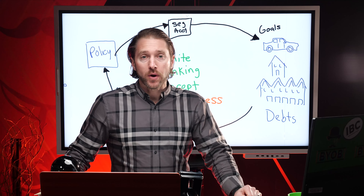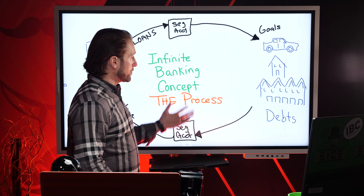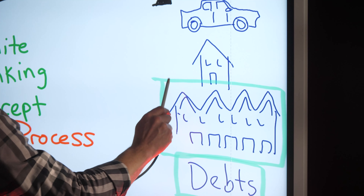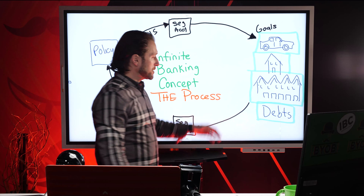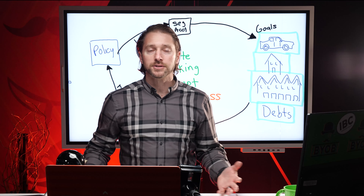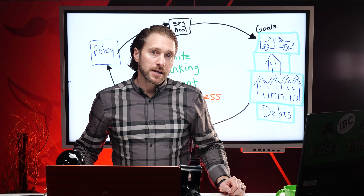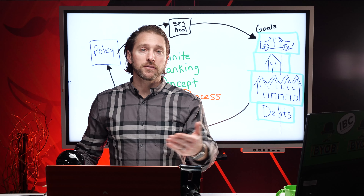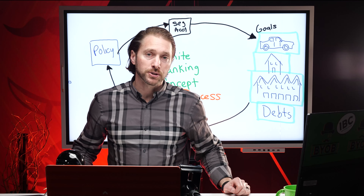We just looked at four different designs — the ways we can build and engineer your policy. Now we need to look at what your goals are. Different people have different goals: some have debts, others want to buy real estate, multifamily, single-family, or cars. The infinite banking concept is a process of taking back the banking functions into your life. Instead of giving up control — monthly payments to credit cards, car finance companies, banks that issue mortgages — you are simply financing all the things you buy using your own bank.